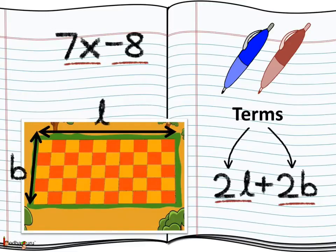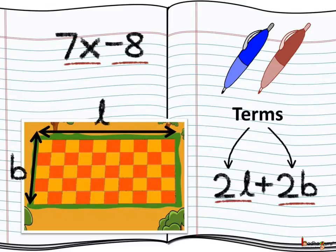Similarly, in the algebraic expression 7x minus 8, there are two terms: 7x is the first term and minus 8 is the second term. So we see that terms can be a number like minus 8, just a variable, or a number and variable combined by multiplication or division — like 7 and x are combined by multiplication here.